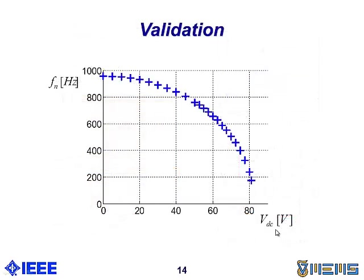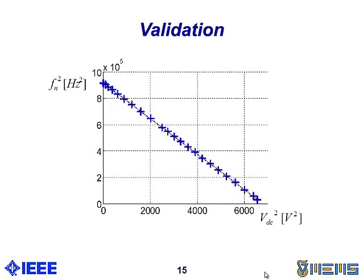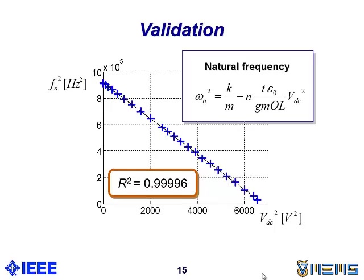The initial unloaded frequency was about 970 hertz, and as we increase the tuning voltage from zero up to 80 volts, we can downtune the natural frequency by 80% down to about 170 hertz. What is more interesting, here we see frequency squared as a function of voltage squared, and this plot looks fairly linear. If we look at the linearity of these results, they're ridiculously linear, which for us confirms our model predictions that frequency squared is indeed related to voltage squared.